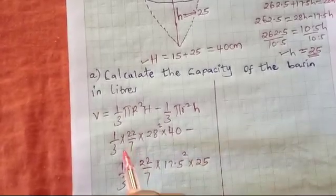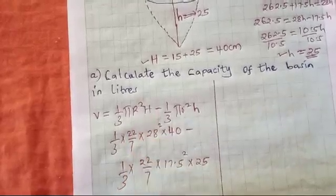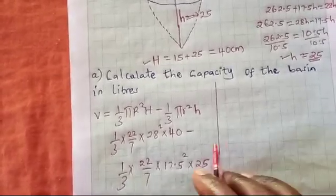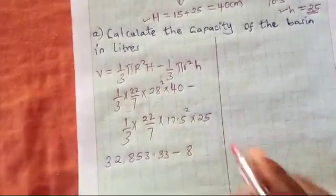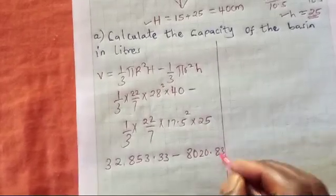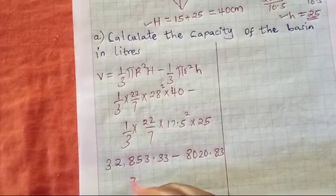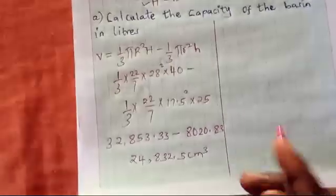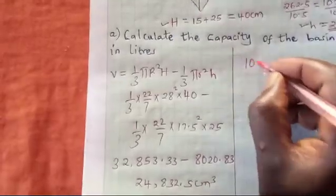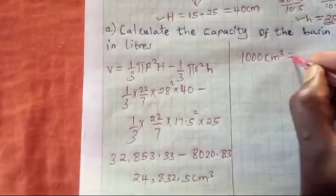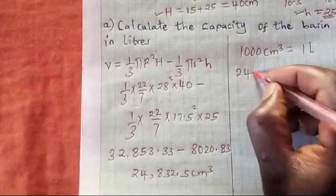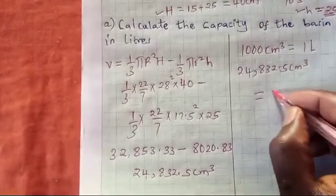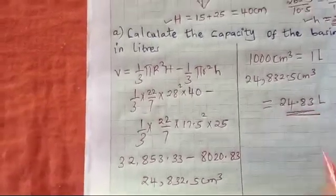Calculating each part: the first gives 32,853.33, and the second gives 8,020.83. Subtracting gives 24,832.5 cubic centimeters. Since we need the answer in liters, and 1,000 cubic centimeters equals one liter, 24,832.5 cubic centimeters equals 24.83 liters.